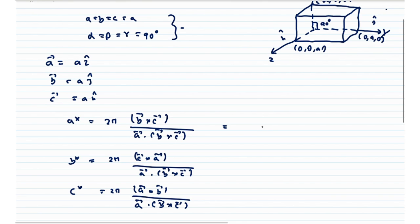By 2π, and this volume is given by a cubed, because this is nothing but a cube. So a squared and a cancel out, we have 2π by a i-cap. Similarly we can do 2π by a j-cap and 2π by a k-cap. So what is this? This is the reciprocal lattice for a simple cubic.